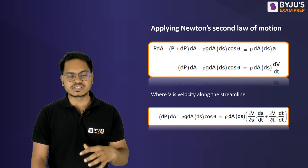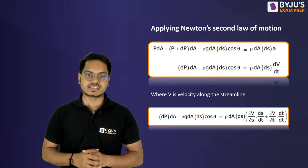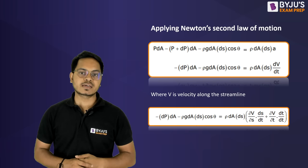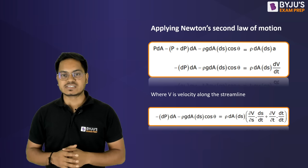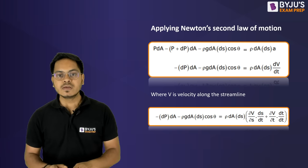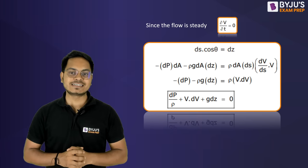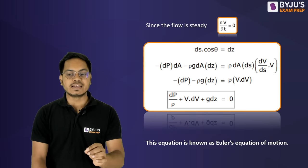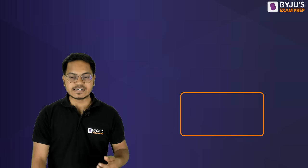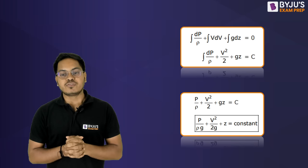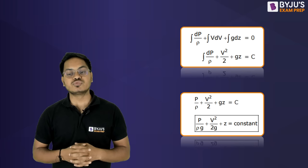Opening the acceleration component, there are two types: convective and temporal. We take the assumption that the flow is steady in nature. Since the flow is steady, components changing with respect to time are neglected — so ∂v/∂t becomes zero. Eventually, this gives us the Euler equation of motion: dp/ρ + v·dv + g·dz = 0.